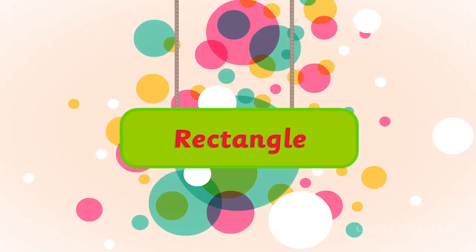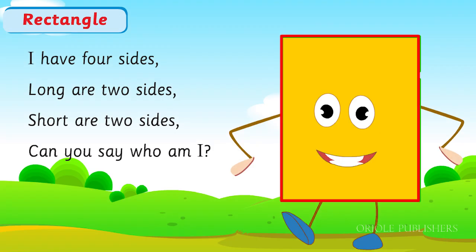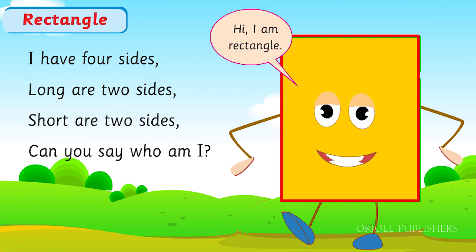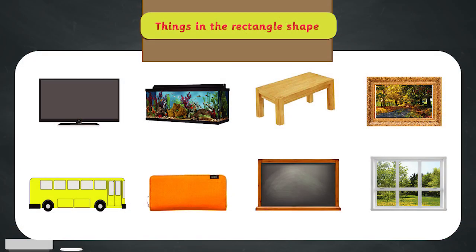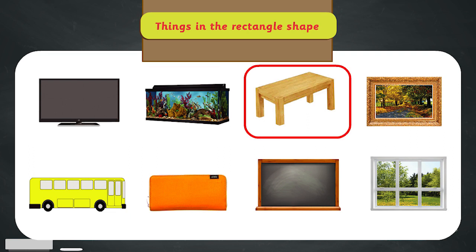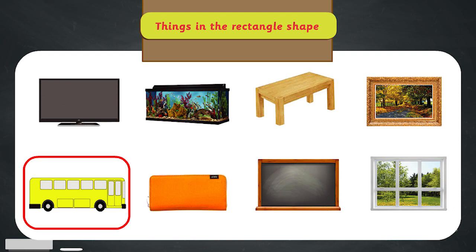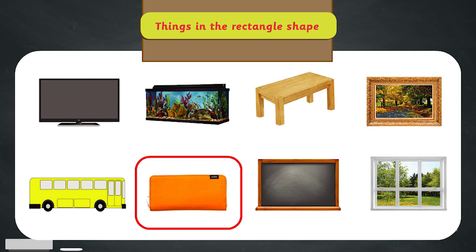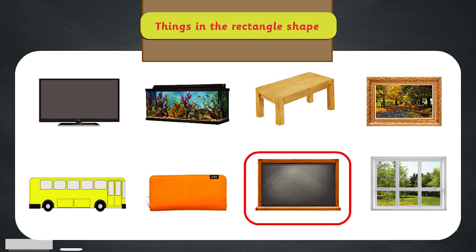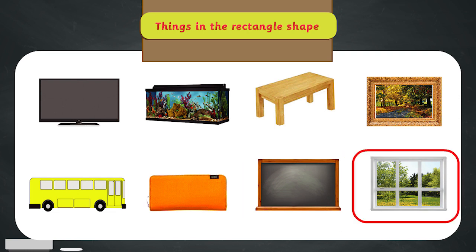Rectangle. I have four sides. Long are two sides, short are two sides. Can you say who am I? Hi, I am a rectangle. Things in rectangle shape: Television, Aquarium, Desk, Photo frame, Bus, Purse, Blackboard, Window.